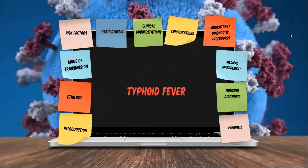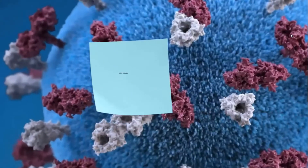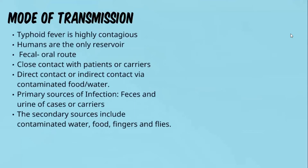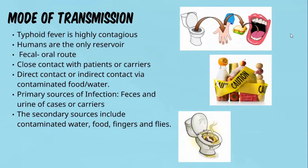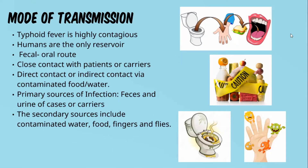Typhoid fever is highly contagious, and humans are the only reservoir of the bacteria. It is spread from person to person via the fecal-to-oral route. This means that most infected individuals ingest bacteria from contaminated food or water. Like many foodborne diseases, lack of proper hand washing is often the cause. Primary sources of infection include feces and urine of cases or carriers, and secondary sources include contaminated water, food, fingers, and flies.